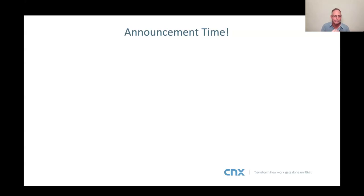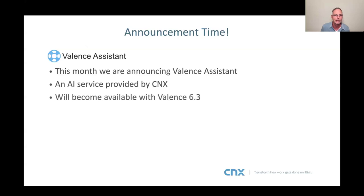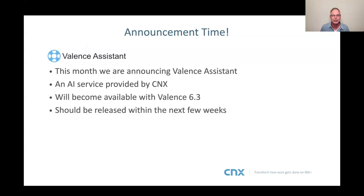Now I'm going to announce the special thing I teased at the beginning. We have something new coming out this month in Valence 6.3 — we're calling it the Valence Assistant. This is an AI service provided by CNX. It will become available in Valence 6.3, which should be released within the next few weeks. I'm not giving a specific date because we always slip a little, but we're crossing the T's and dotting the I's.